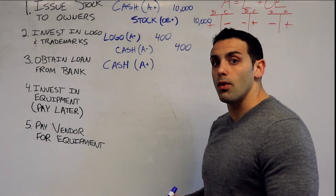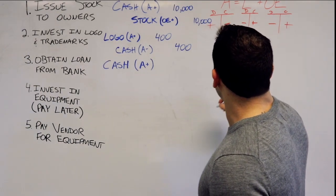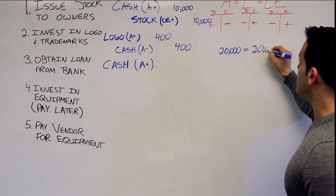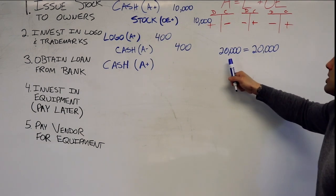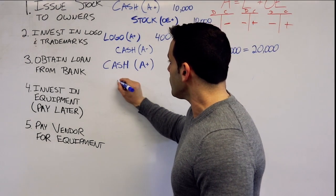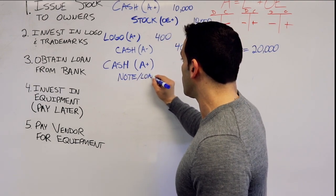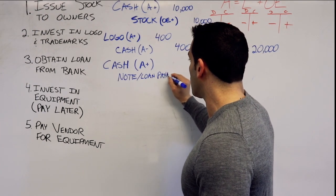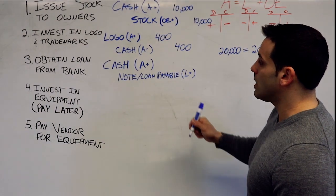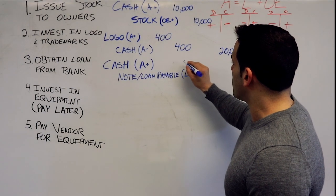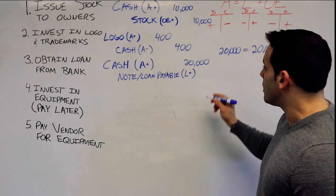Now on the flip side, we're going to incur debt. We're going to incur a liability because we're getting a loan. So on the liability side of things, we're increasing this liability by the amount of the loan. So does our accounting equation balance? Yes, it does. So we're getting a note or a loan payable. That's a liability that's increasing. So we are going to debit cash for $20,000, and we're going to credit notes or loans payable for $20,000.